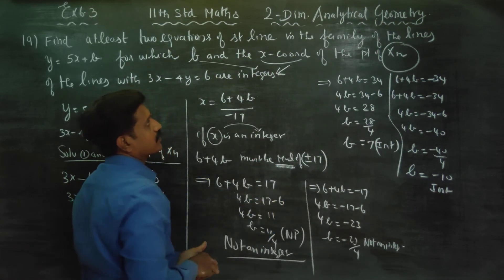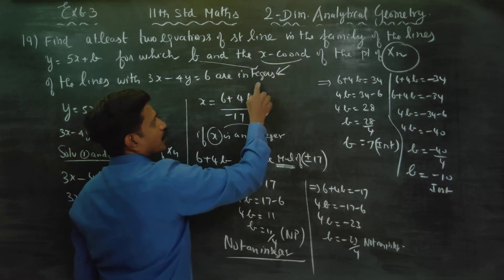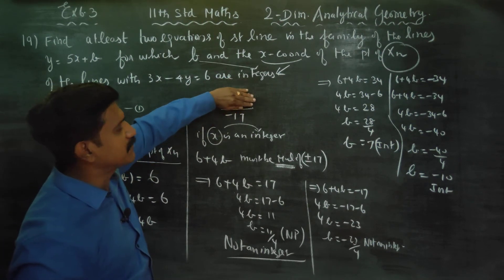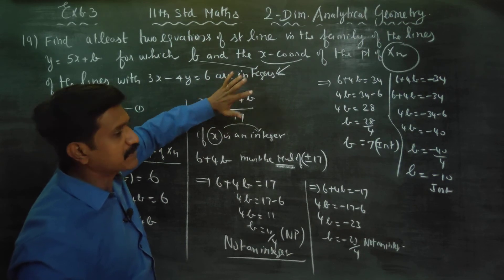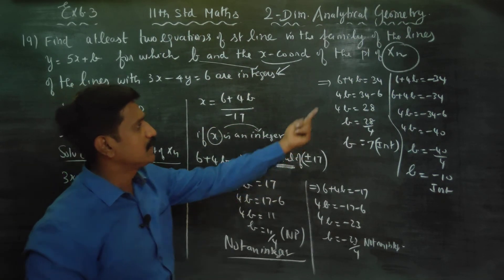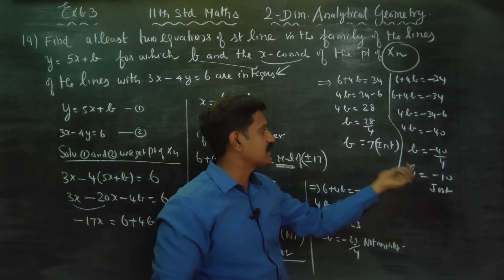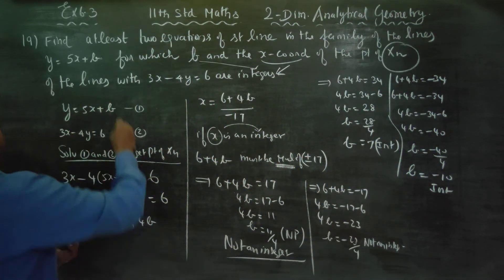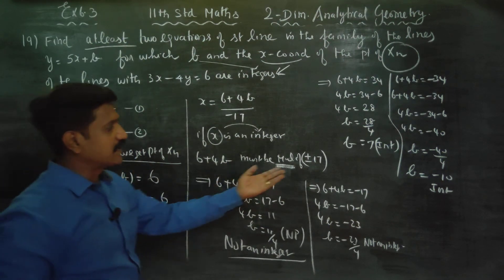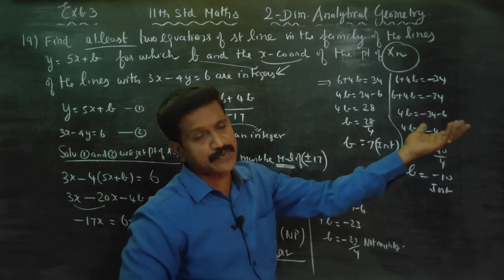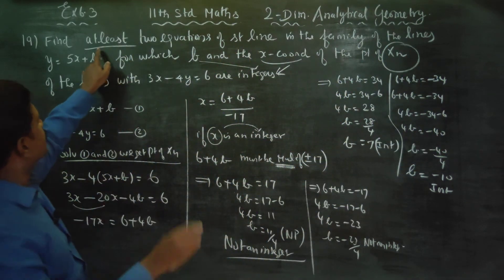So the condition is that the x-coordinate must be an integer. If x is an integer, the numerator must be a multiple of 17, so that the denominator 17 cancels the fraction. We try multiples of the 17 times table: 1 times, 2 times, 3 times, 4 times, 5 times — infinitely many are possible. The problem asks for at least two.